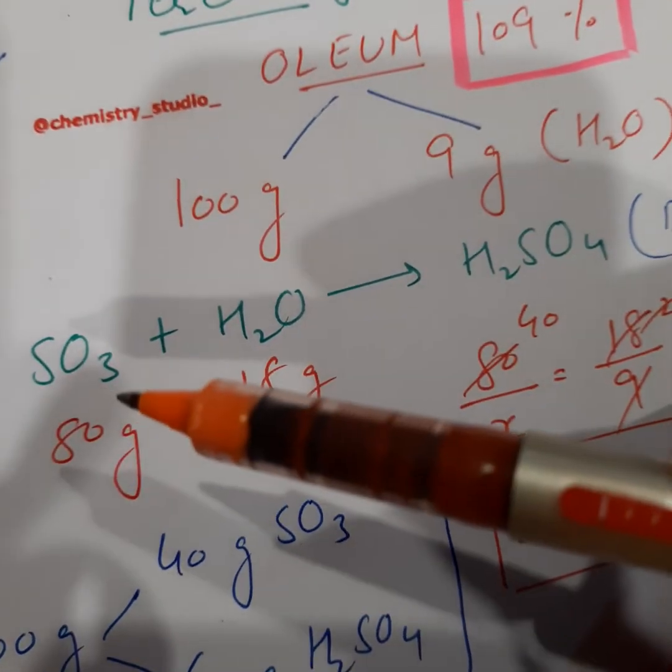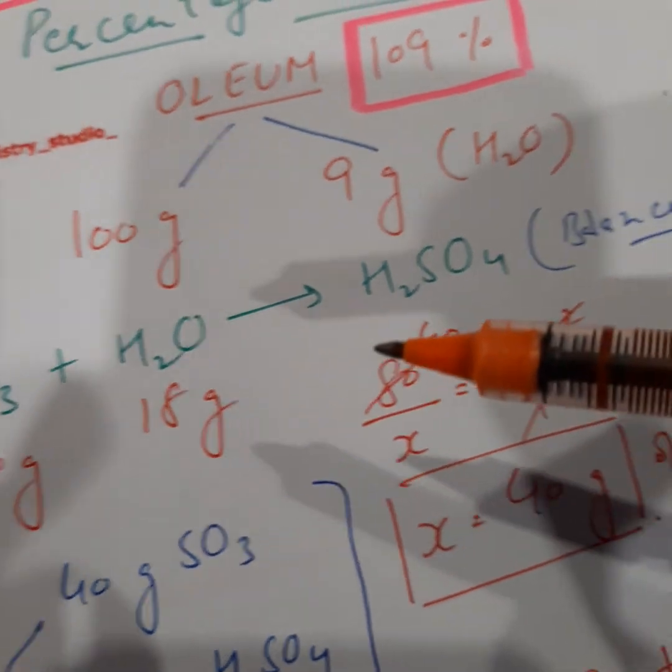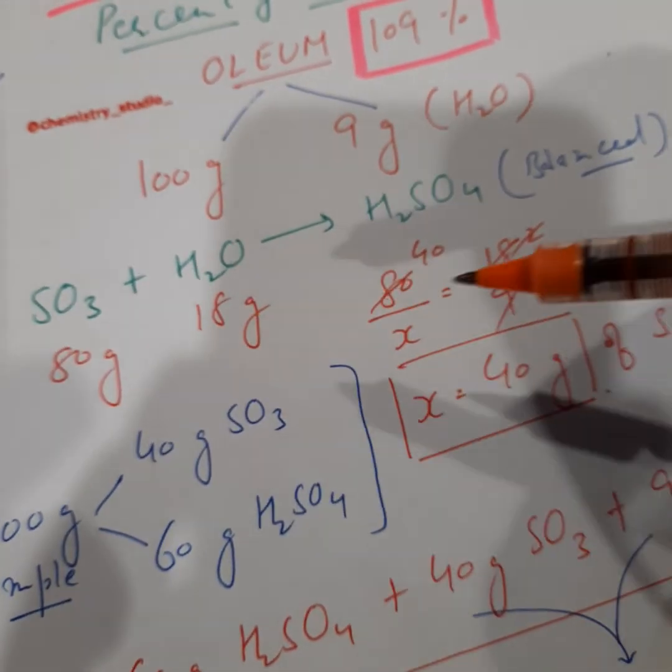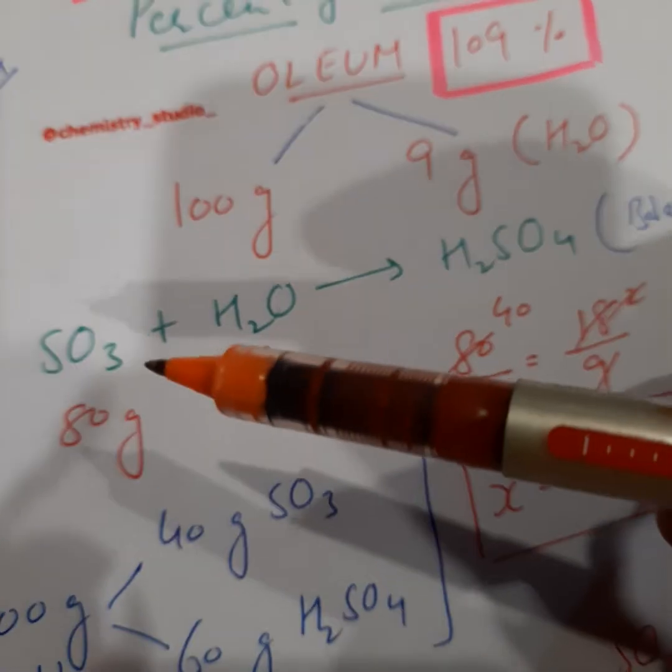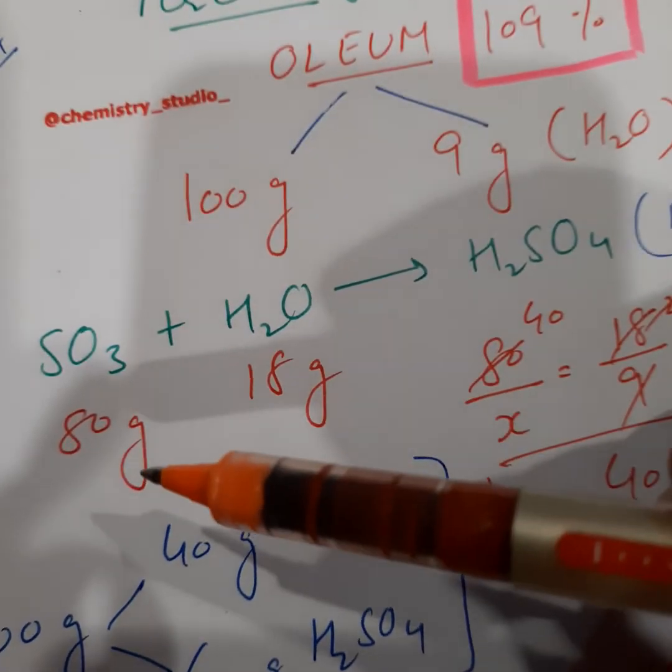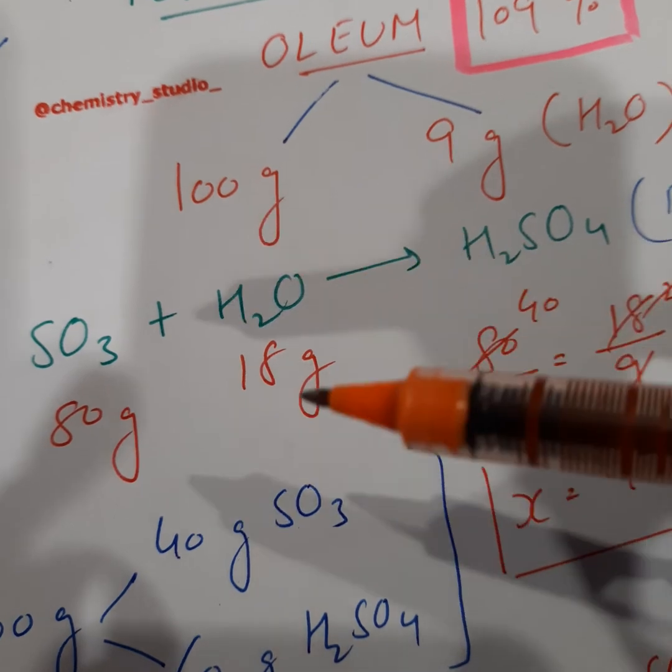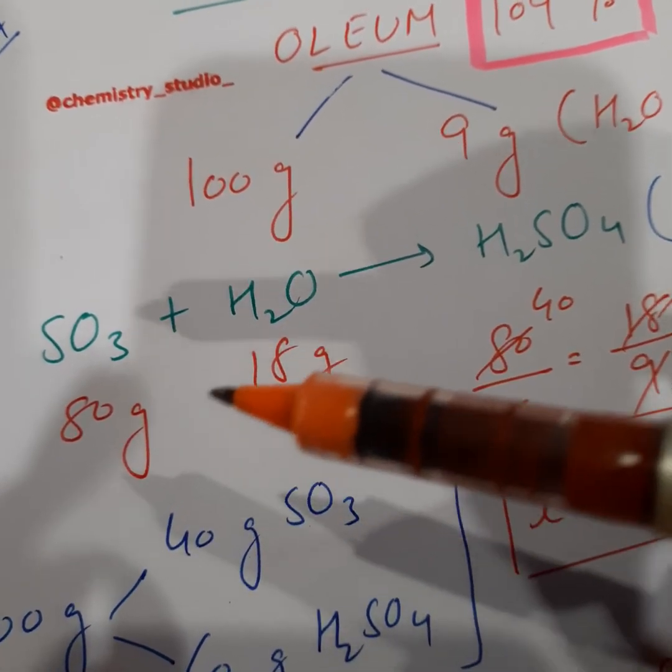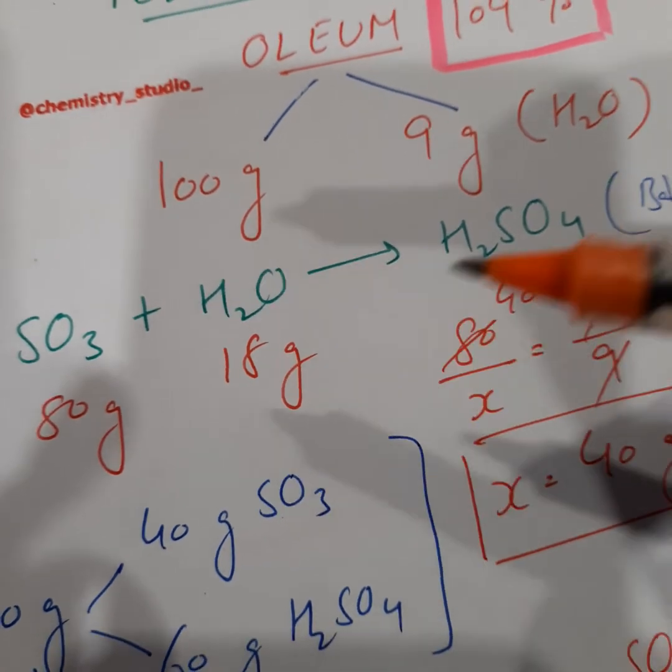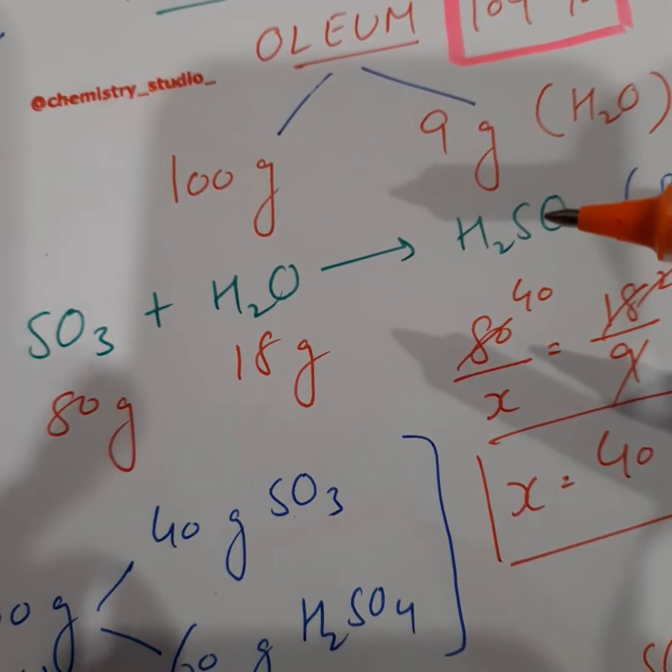Now sulfur trioxide reacts with water to form sulfuric acid. You can see this equation is balanced. So because this equation is balanced, now the molecular mass of sulfur trioxide is 80 grams, molecular mass of water is 18 grams. So 80 grams of SO3 is going to completely react with 18 grams to form corresponding amount of sulfuric acid.